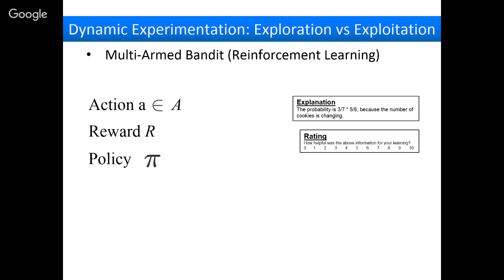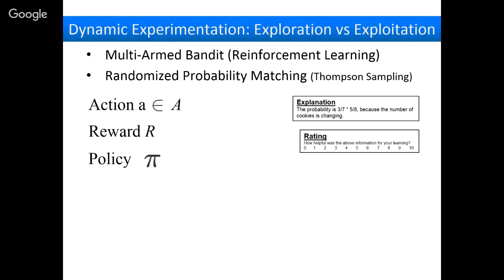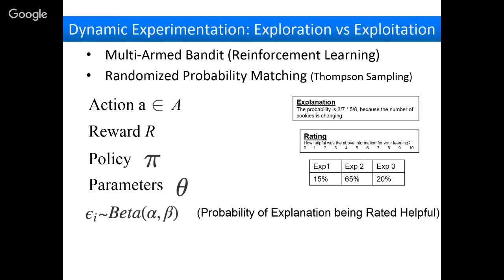The policy is a randomized probability-matching algorithm — Thompson sampling — where the probability of assigning people to a condition is the probability that it's the best explanation based on data so far. To know what's highest rated, we need a model — in this case a beta-binomial. The probability of an explanation being rated helpful follows a beta distribution on the interval zero to one, giving you an estimate of how likely it is that this explanation is helpful, as a distribution over probabilities. If you have a flat beta distribution, you don't know if it's 0.2, 0.4, or 0.6.